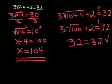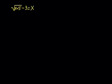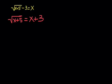Let's take a look at a second example. Again we want to isolate the square root, then solve by squaring both sides and solving the resulting equation. I need to get rid of the negative 3 on the side of the square root, so I'm going to add it to the other side — it moves across and becomes positive, added to x. Now I have isolated the square root and I'm going to square both sides. You have to be careful here — you're squaring the entire side.